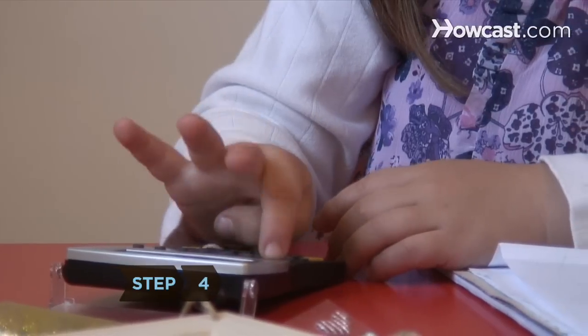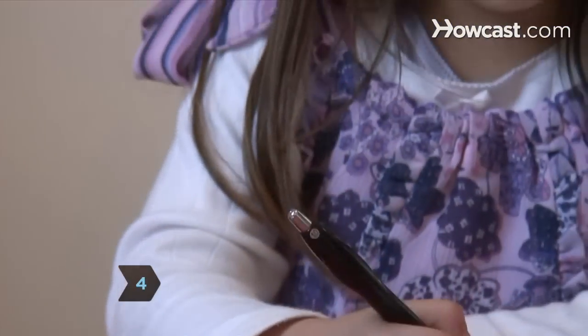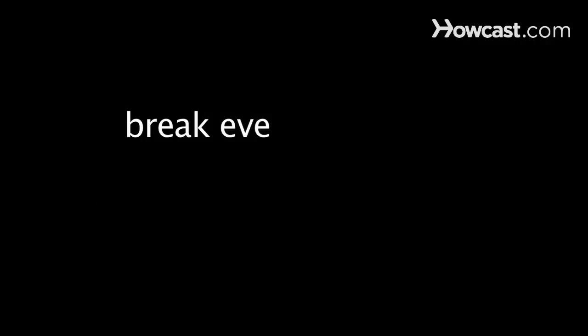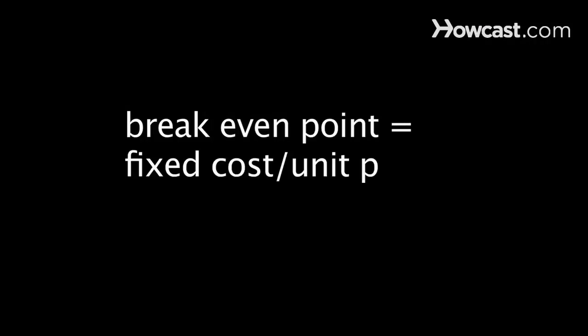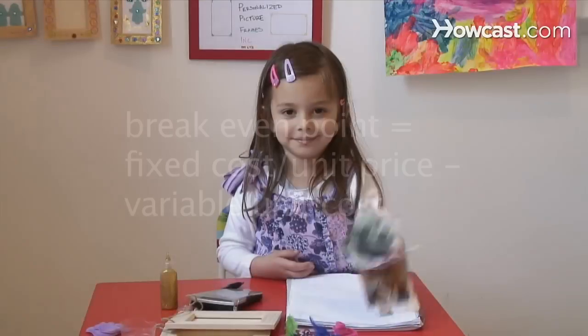Step 4. Calculate the break-even point using the formula: break-even point equals fixed cost divided by the unit price minus the variable unit cost.